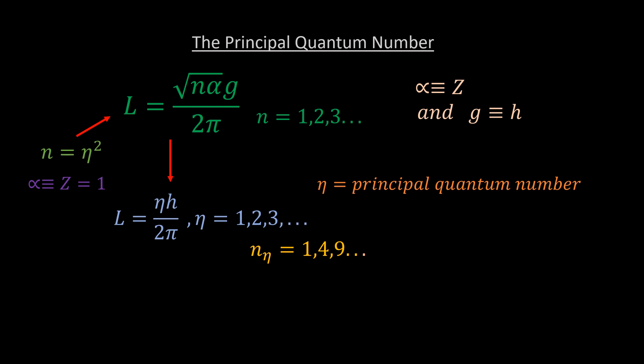It is now clear that there are missing orbits corresponding to orbital quantum numbers 2, 3, 5, 6, 7, 8 and so on.